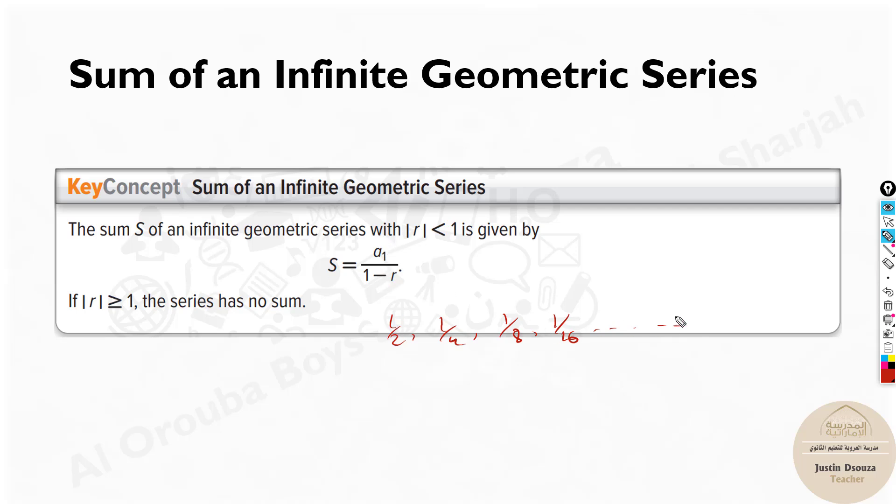But technically it goes until infinity, right? How can you add till infinity? So imagine you have a piece of cake, maybe one kg cake, you cut into half, it's half kg now. You cut again half, it'll be quarter. How many times you can keep on dividing into half?